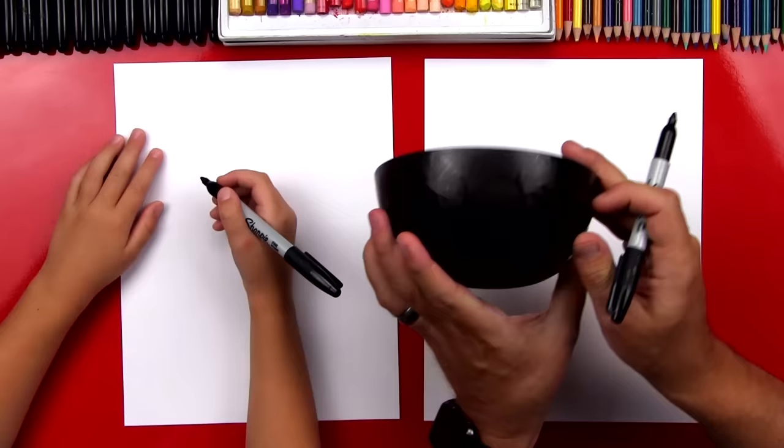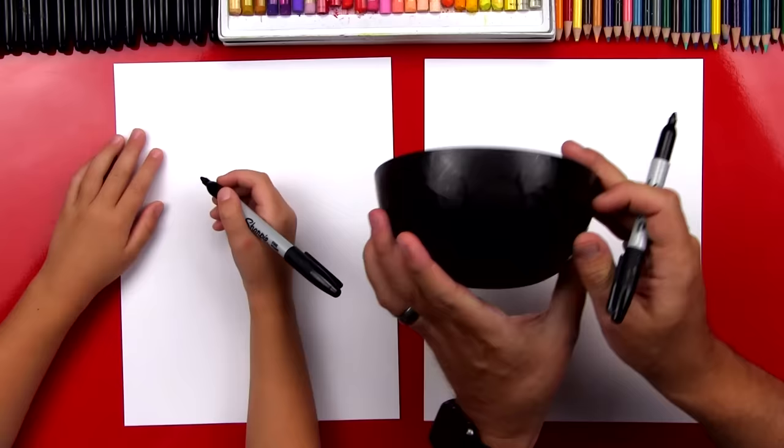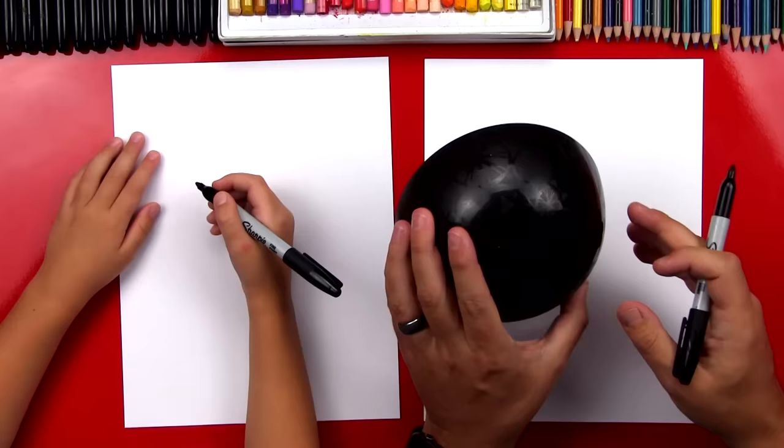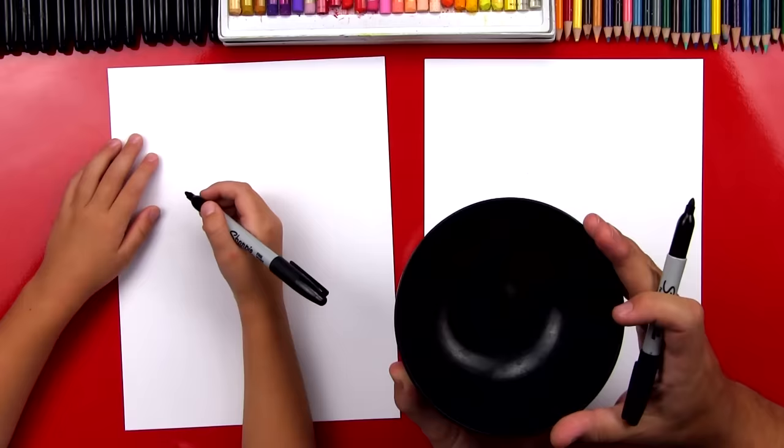Now for this lesson, you also need a bowl. We're going to use a black bowl because we're going to trace around it. We're using it as a template. So you guys at home, make sure that you ask a parent or an adult for a bowl that you can use. So we're going to put the bowl down right on the piece of paper.